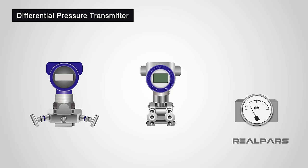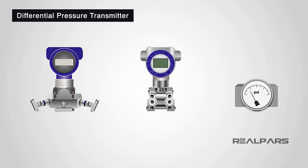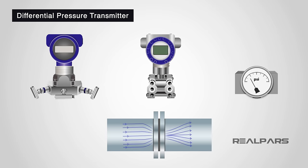In this lesson, we are going to discuss Differential Pressure Transmitters. Simply put, a differential pressure transmitter is a device that measures two opposing pressures in a pipe or vessel.